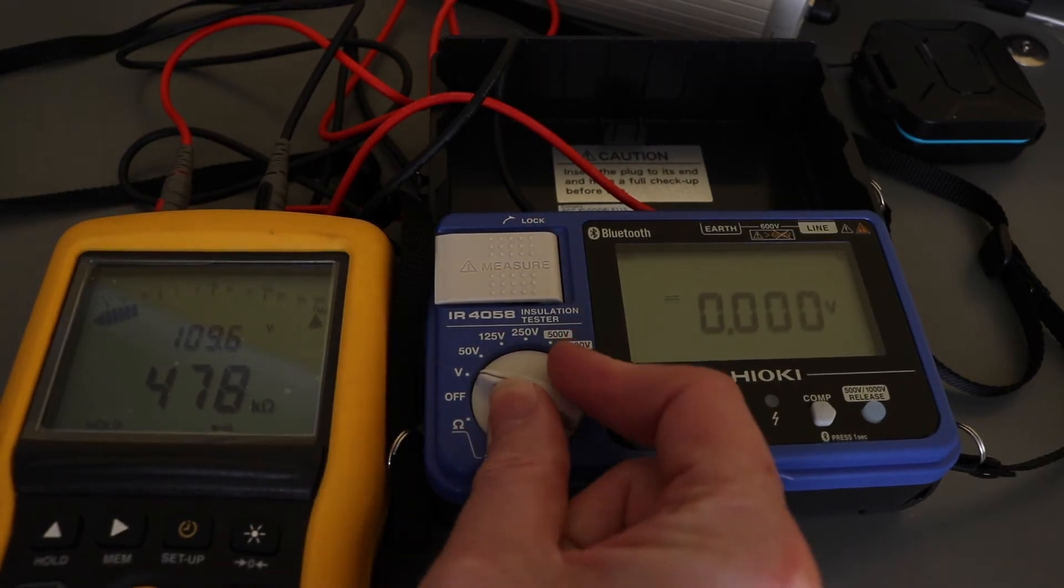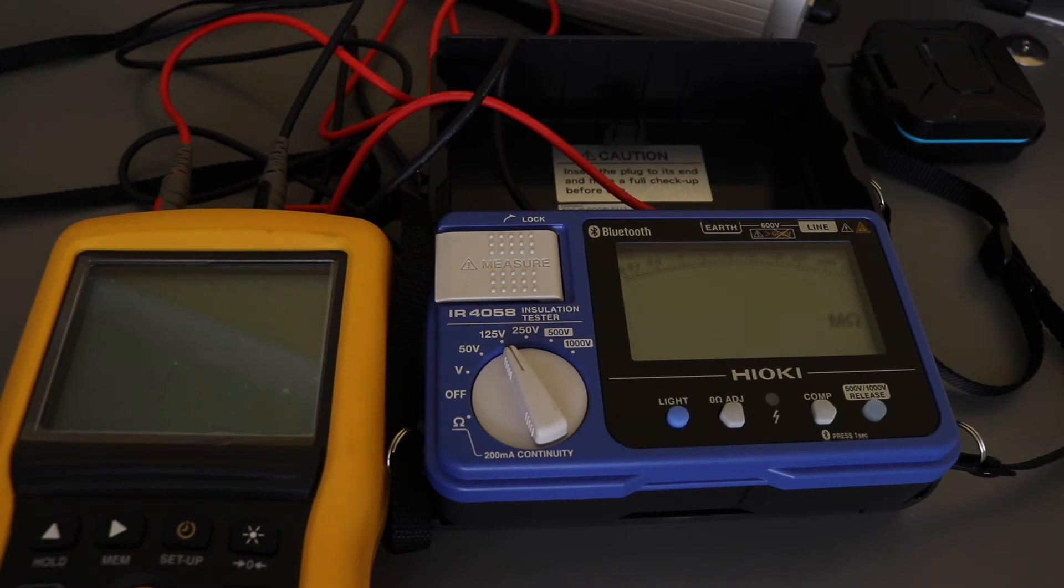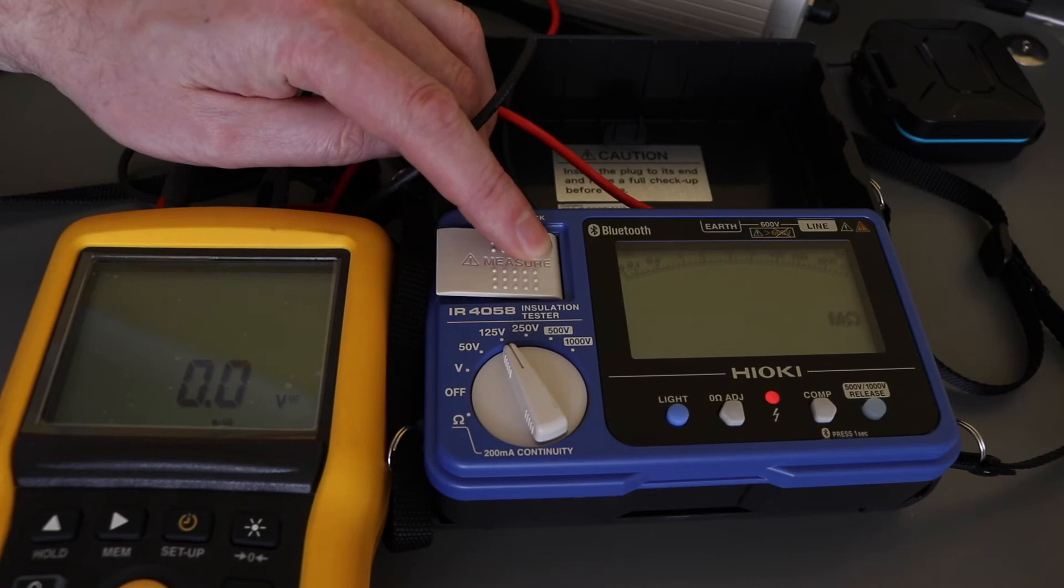If I now swap the functions over, put this one onto insulation test and this one onto voltage, and do the same again.